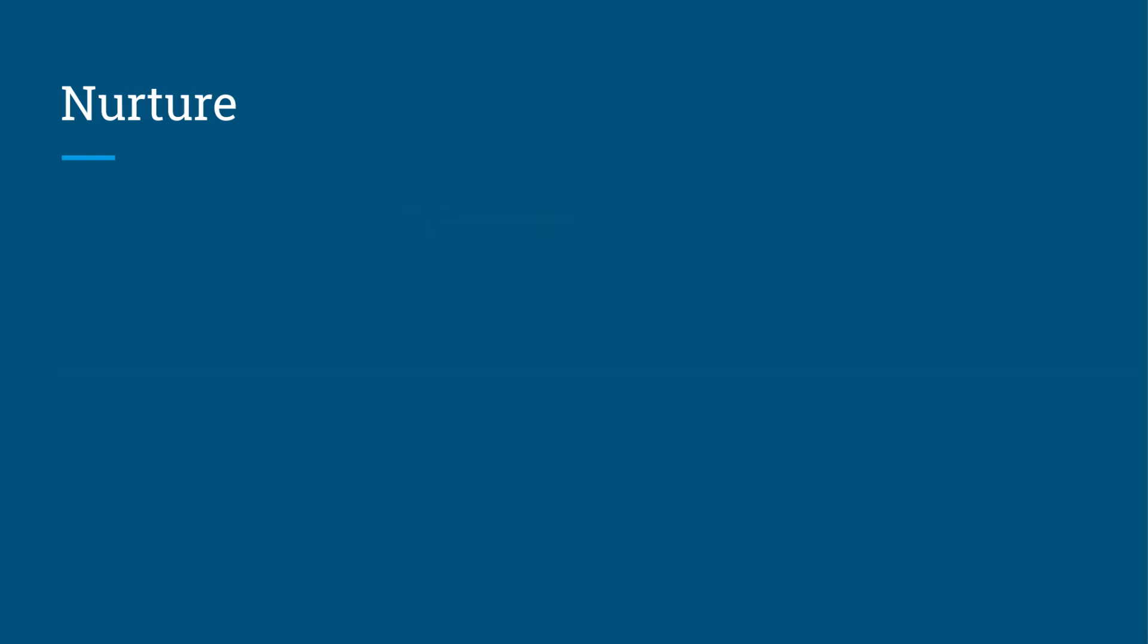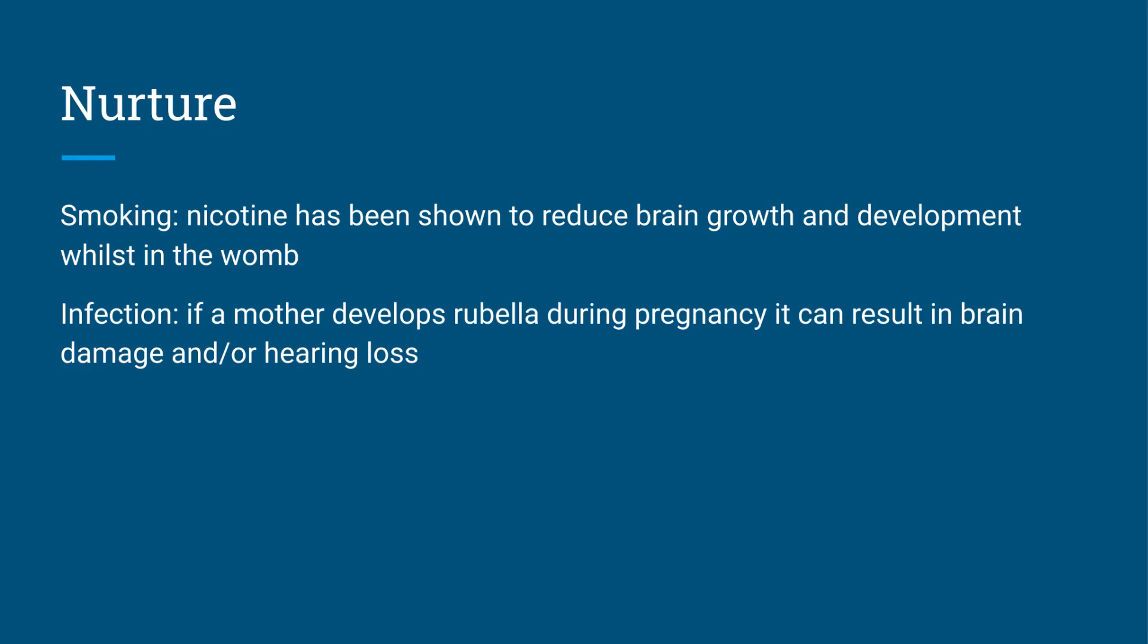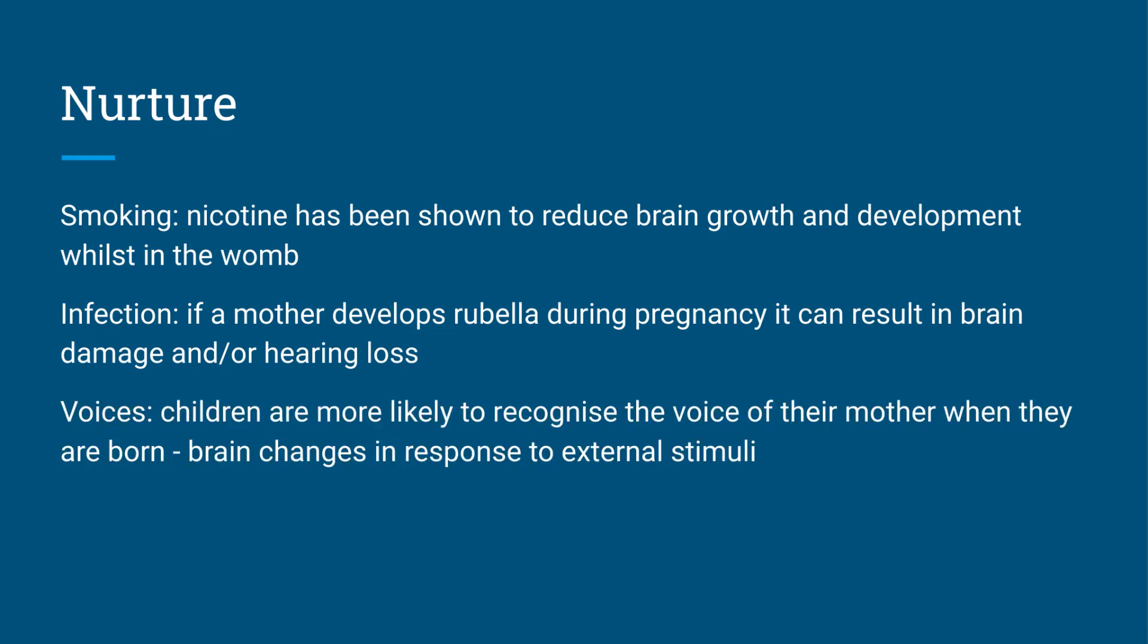This is where nurture comes in. We're going to look at a few quick examples here of how your environment can affect your brain development. Smoking—if a mother smokes while they have a child in the womb, that child has been shown to have reduced brain growth and development whilst they're in the womb. Same with infection. If a mother develops certain infections such as rubella during pregnancy, it can result in brain damage or hearing loss. Also, voices. Children are far more likely to recognize voices of their mother when they're born. And again, this shows that brain change, your brain does change in response to external stimulus and things that go on in the environment.